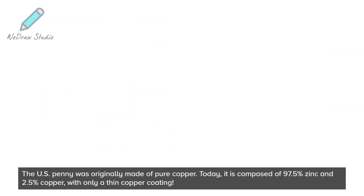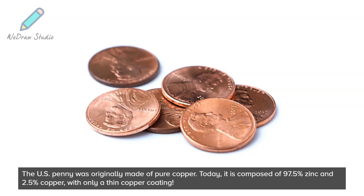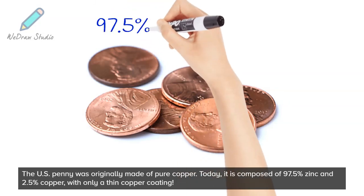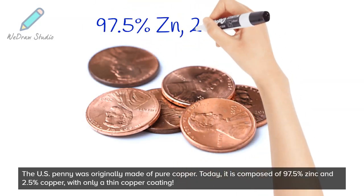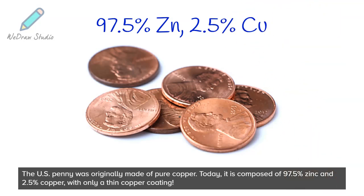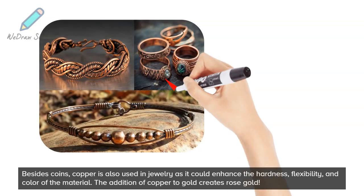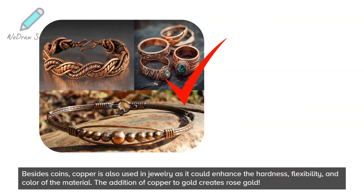The US penny was originally made of pure copper. Today, it is composed of 97.5% zinc and 2.5% copper, with only a thin copper coating. Besides coins, copper is also used in jewelry as it can enhance the hardness, flexibility, and color of the material. The addition of copper to gold creates rose gold.